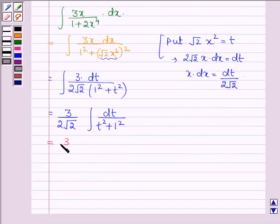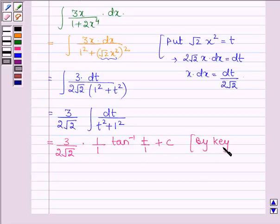So this can be written as 3 upon 2 root 2 into 1 upon 1 tan inverse t upon 1 plus c. This is with the help of our key idea.